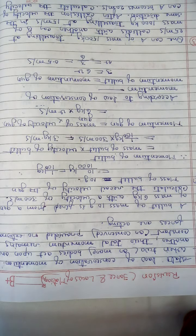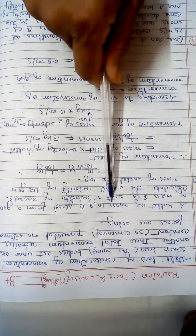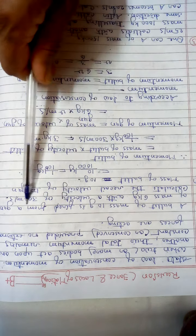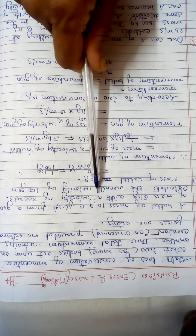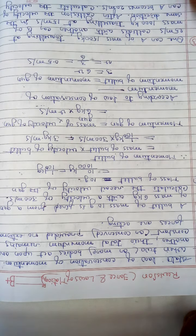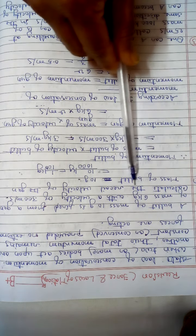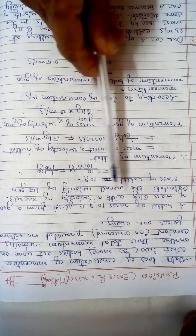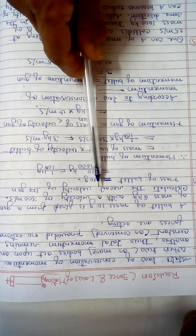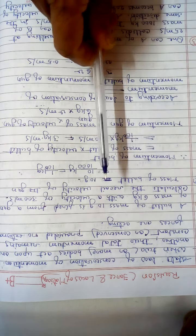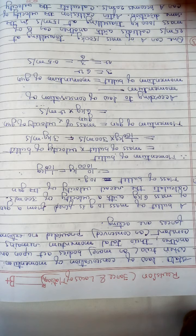Question number 2: A bullet of mass 10 grams is fired from a gun of mass 6 kg with a velocity of 300 meters per second. Calculate the recoil velocity of the gun. Here we can find out the recoil velocity of the gun with the help of the law of conservation of momentum.